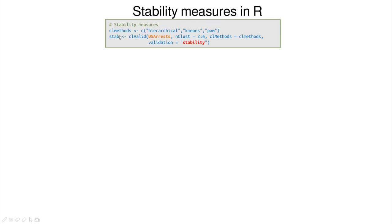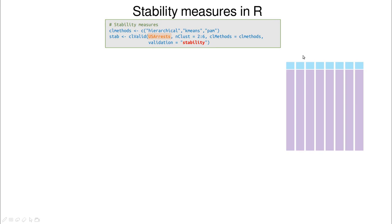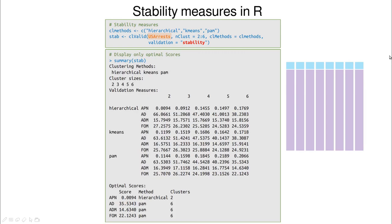Let's do that in R. We use clValid again but with a different dataset — the US Arrests data — because we need to remove columns iteratively, so this can't be applied to two-dimensional data. Using stability validation and trying two to six clusters, different methods suggest different winning numbers of clusters, but hierarchical clustering appears to be the winner overall. However, remember we only have 50 observations and 50 states — having six clusters would mean only about eight observations per cluster. Using statistics combined with common sense, two clusters are good enough for this problem.